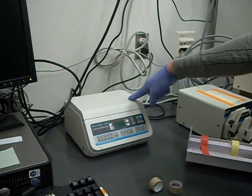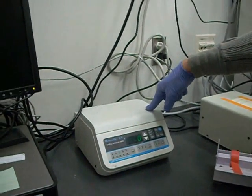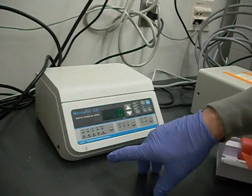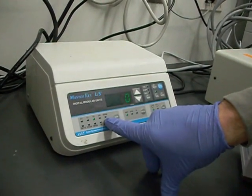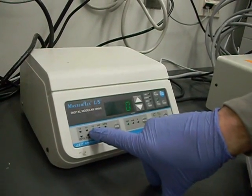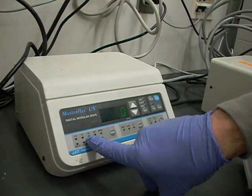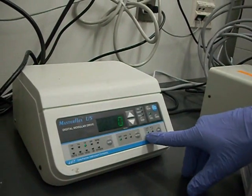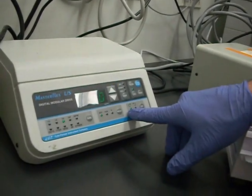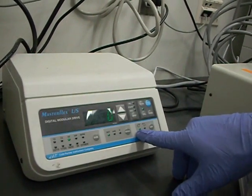This is our modular drive control for the pump. The important thing to make sure is that you have the correct size selected. We're using 16 tubing, so we have that selected here. And you have the correct direction of the pump. And then you're ready to start.